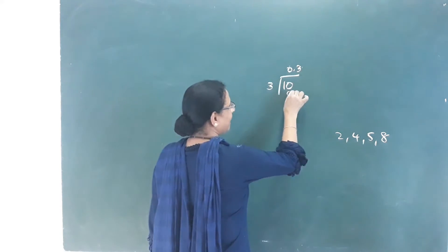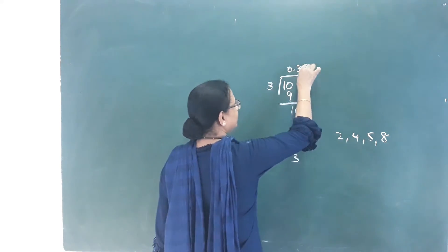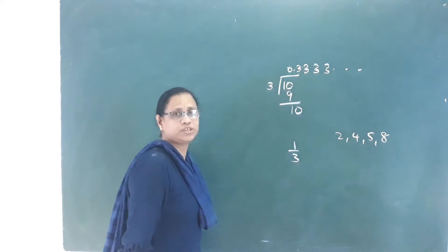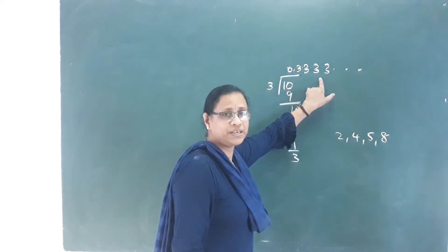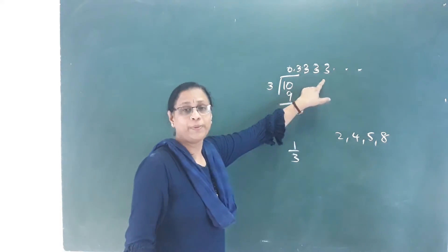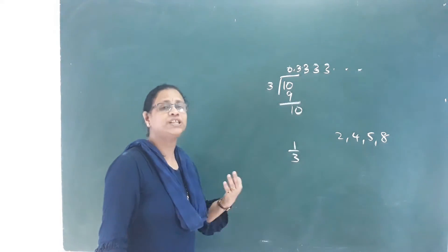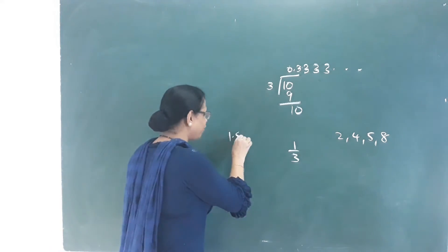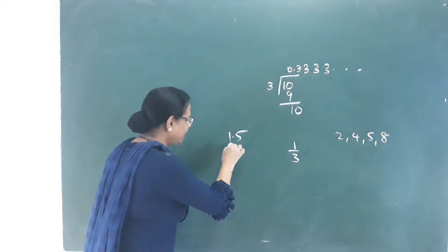We get 0.3 repeating: 3 into 3 gives 9, and we keep getting remainder, so the decimal keeps going: 0.3333... This is a non-terminating decimal.